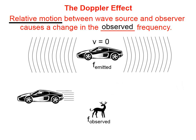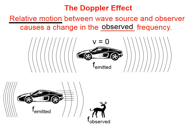Now as the car goes past, it's still emitting the same sound waves. But now our observer will observe a lower frequency, because the wave fronts are spread out in the back.